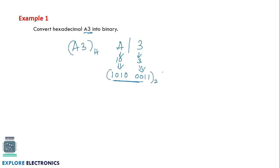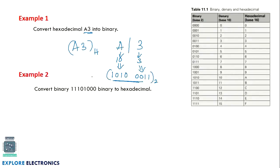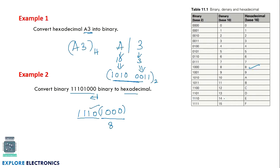To convert binary back to hexadecimal, split the binary number into four-bit groups starting from the right. For example, grouping as 0001 and 0111: 0001 equals 1, and — wait, correcting — 1000 equals 8, and 1110 equals 14 in decimal which is E in hexadecimal. So the equivalent hexadecimal number is E8 (base H).